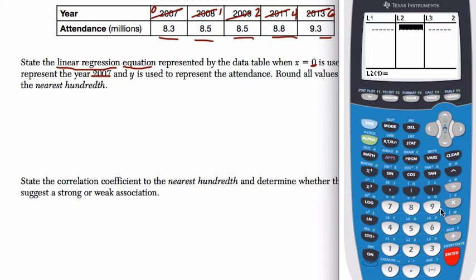My x value is my time, that's the independent variable: 0, 1, 2, 4, 6. And then the y values are 8.3, 8.5, 8.8, and 9.3. Wait, I missed something—8.5 appears twice. So it's 8.3, 8.5, 8.5, 8.8, 9.3.